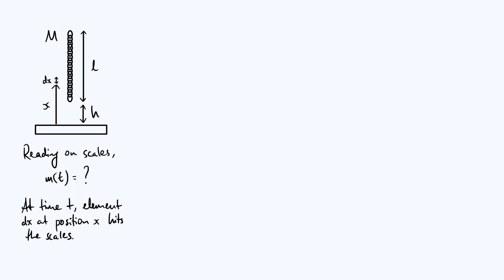I just want to point out that we are making a bit of an approximation here, which is that in reality a chain is really a collection of finitely many rigid bodies. You can treat each link of the chain, which has a finite size, as a rigid body, but we're pretending that there are infinitely many very small elements — these dx's. We'll still get a very good theoretical approximation of m as a function of time, but if you were to do this experiment in real life you would find that the curve you get is not quite as smooth as our model suggests, because the chain is really made up of discrete elements.